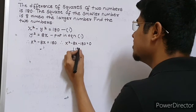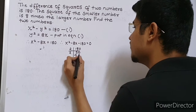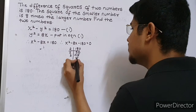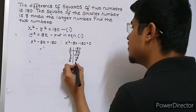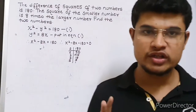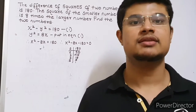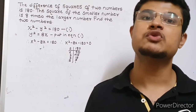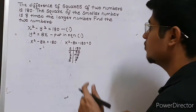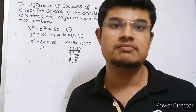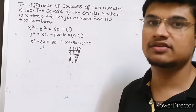I will find the factors of 180: 2 into 90, 2 into 45, 3 into 15, 3 into 5, and 5 into 1. While finding the factors, go with the smallest table because if you go with the largest table there is a possibility that you may miss the required factors. The sum should come as minus 8 and the product should come as minus 180.